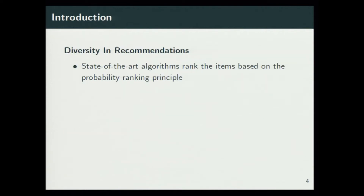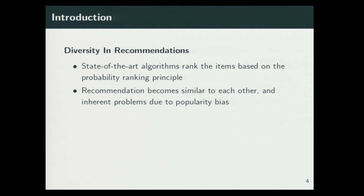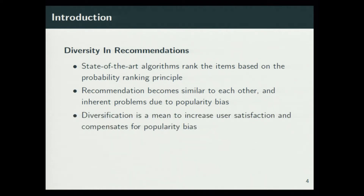First, why we need diversity in recommendation systems and what are our contributions? The majority of recommendation algorithms rank items based on something called the probability ranking principle, which assumes that the relevance of an item is independent of the relevance of other items. But in practice, that's not the case, and items in the recommendation list become similar to each other. There is an inherent problem due to selection bias towards popular items. We would like to solve this, and diversification is a means to solve this and increase user satisfaction.